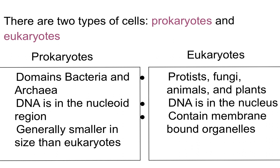There are two major types of cells: prokaryotes and eukaryotes. Prokaryotes are old world, primordial cells. They belong to the domains bacteria and archaea. The DNA in prokaryotes is in a nucleoid region, but it's not bound by a separate membrane, and they're generally smaller in size than eukaryotes.